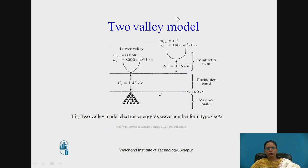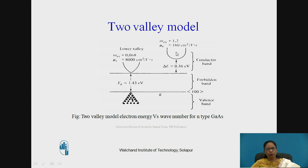Initially, electrons are in the valence band. When we apply sufficient electric field, the forbidden gap is overcome and electrons move to the lower valley. If we further increase the electric field, electrons start transferring to the upper valley. When all electrons have transferred to the upper valley, no further change in current is observed.